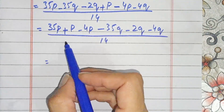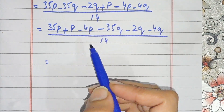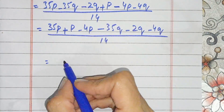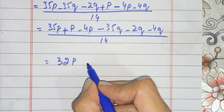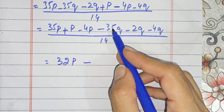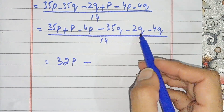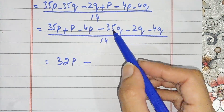We will solve the like terms. 35P plus P is 36P, and 36 minus 4 gives 32P. For Q: 35P plus 2, because minus added to minus means we add — giving 37Q.